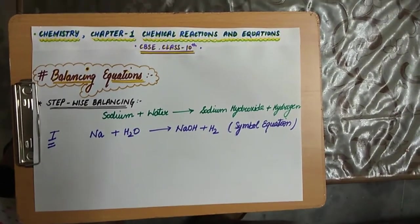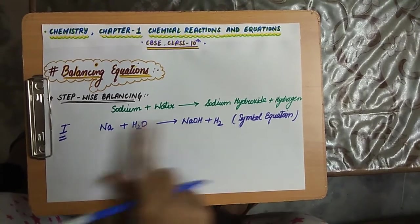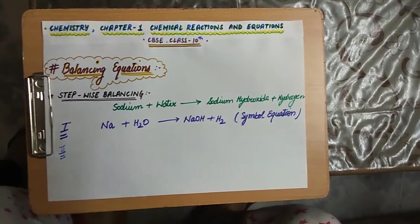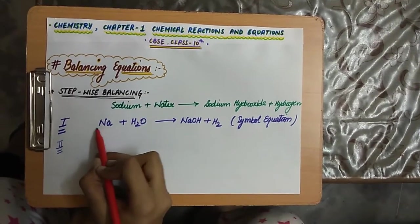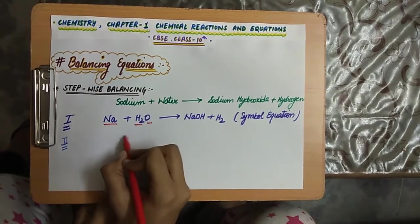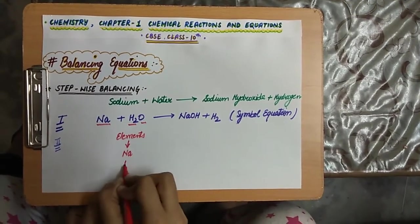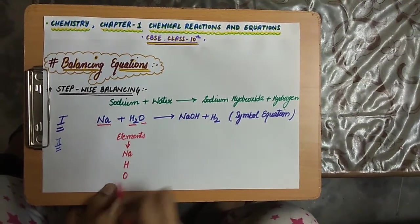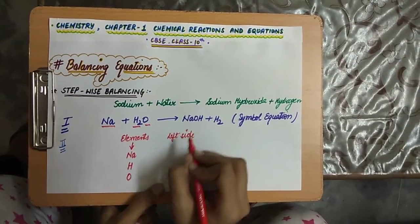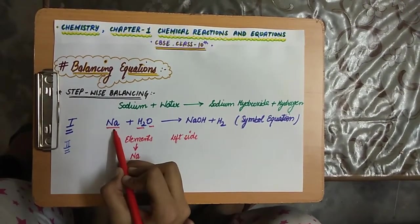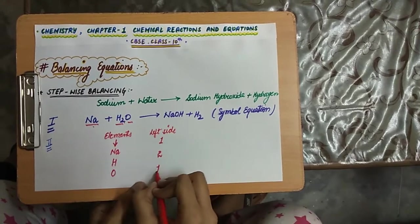Now step 2. In step 2, we have to count the number of atoms of all the elements in the reactants and the products on both sides of the equation. The elements are Na, H (hydrogen), and O (oxygen). On the left side of the equation, the number of atoms of Na is 1, H is 2, and O is 1.